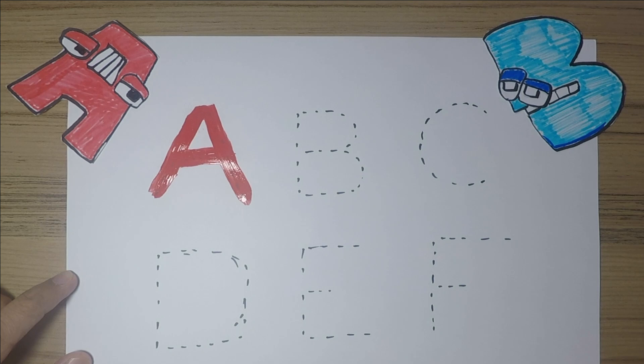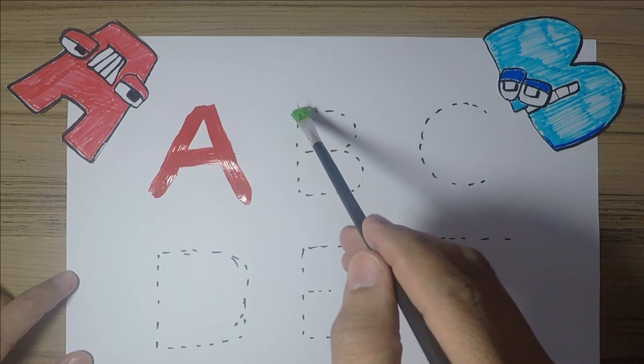Let's use the color green to paint alphabet B. You know B stands for ball and basket.